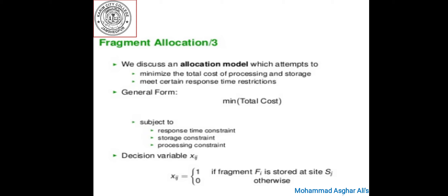Now, allocation models. We discuss an allocation model that attempts to minimize the total cost of processing and storage while trying to meet certain response time restrictions. The model has the following form: minimize total cost, subject to response time constraints, storage constraints, and processing constraints. The decision variable Xij equals 1 if fragment Fi is stored at site Sj, otherwise 0.